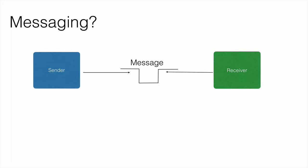What is messaging? Messaging is a method of communication between software components or applications. A component sends a message to a destination and a receiver reads the message from that destination. The sender and the receiver need not be available at the same time in order to communicate, and they are not aware of each other. The only thing they need to know is what message needs to be sent and where it should be sent or read from. That is where the power of messaging comes from, allowing us to build completely decoupled applications.